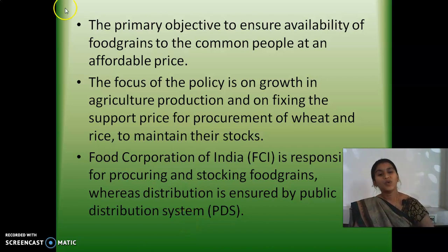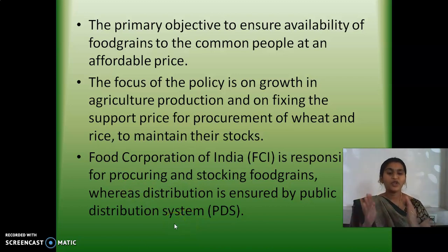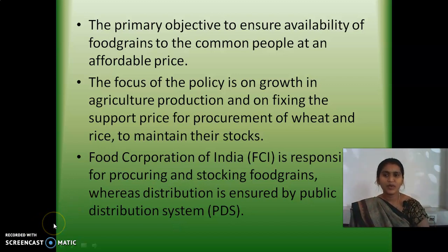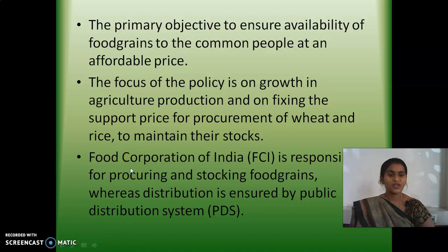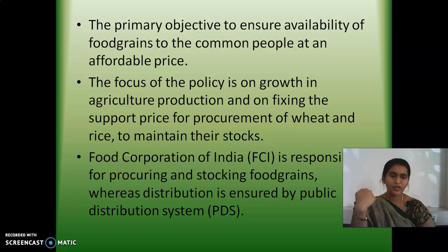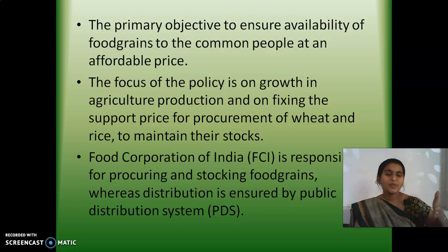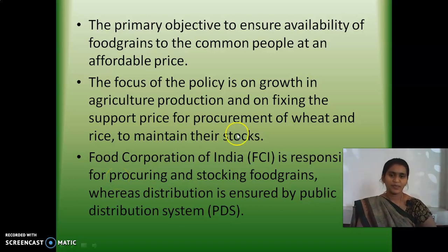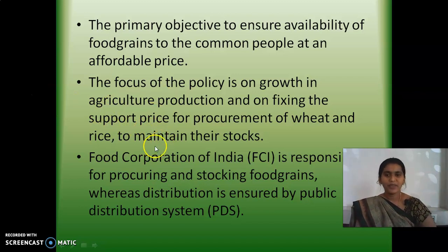The Food Corporation of India is responsible for procuring and stocking food grains, whereas the distribution is ensured by the public distribution system. The Food Corporation of India purchases the food grains, stores them, and then the distribution part is the responsibility of the public distribution system, which tries to reach all the people and distribute goods at affordable prices.